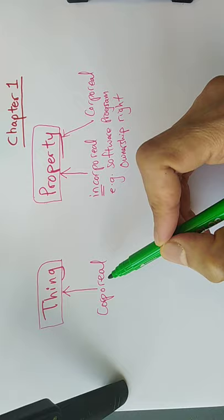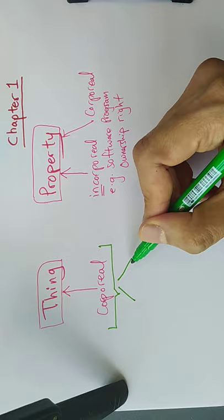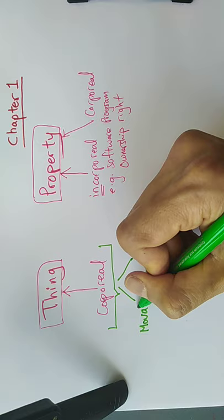Now, a 'thing' that is corporeal is further divided into two categories: what we would call a movable thing and an immovable thing.